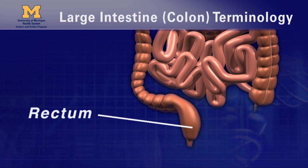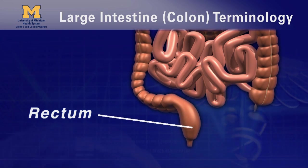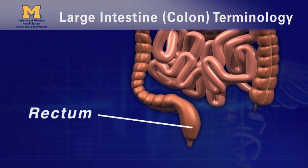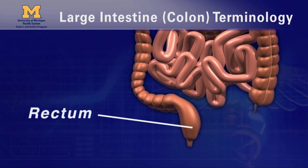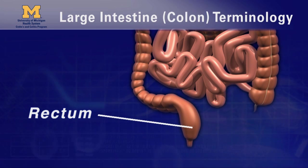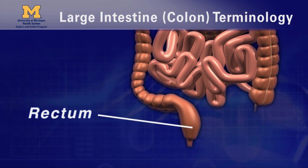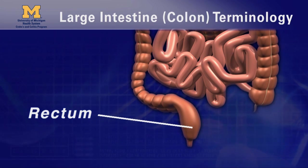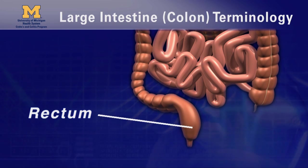When you have active proctitis, the rectum is not able to stretch and store stool very well. As a result, you may feel the urge to have bowel movements more frequently, or have frequent small bowel movements. In review, the colon begins as a pouch named the cecum. The next three parts are simply named for the direction food waste moves: the right colon or ascending colon, the transverse colon, and the left or descending colon. Then comes the S-shaped portion called the sigmoid, and finally the rectum, where stool is stored until passed through the anal canal.